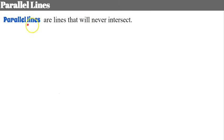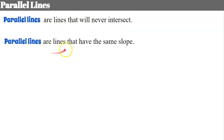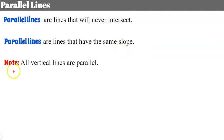Let's begin by reviewing parallel lines. Parallel lines are lines that will never intersect and have the same slope. When two lines are graphed in the same coordinate plane, they will have the same slope. Special note: all vertical lines are parallel. This is important because vertical lines have an undefined slope, so you can't say they have equal slopes, but all vertical lines are considered parallel to each other.